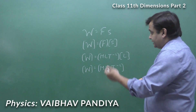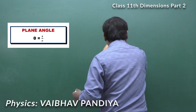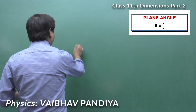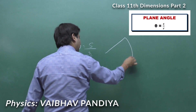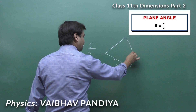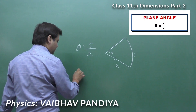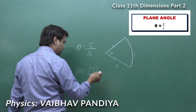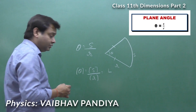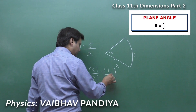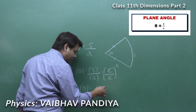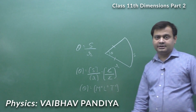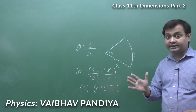The next quantity is the plane angle. Plane angle is defined as arc length divided by radius (θ = s/r). Arc length has dimensional formula L, and radius also has dimensional formula L — they cancel out. So the dimensional formula for plane angle is M⁰L⁰T⁰, meaning plane angle is a dimensionless quantity.